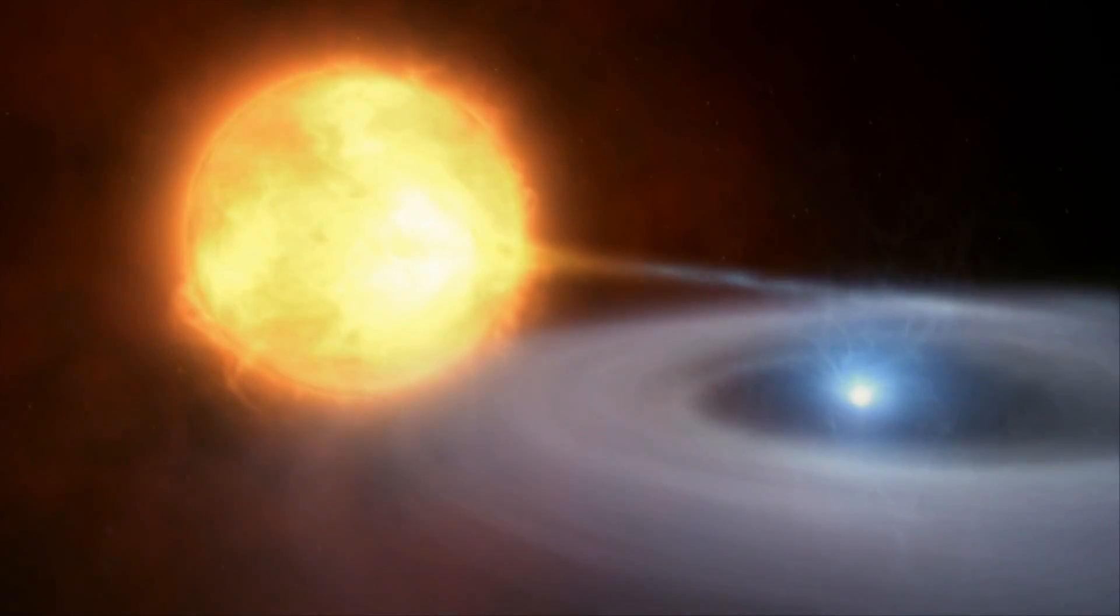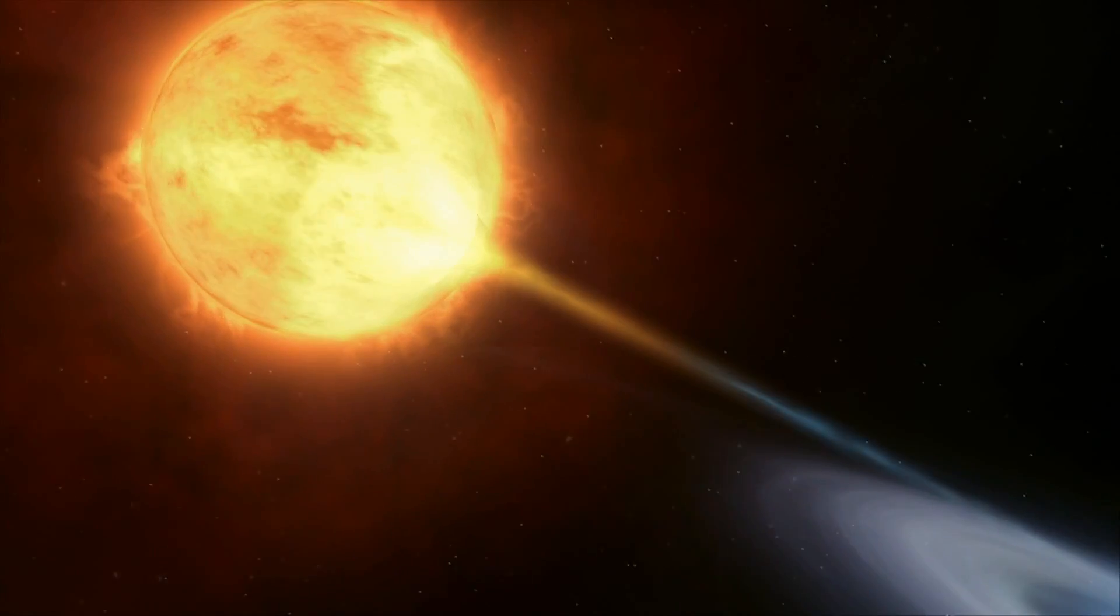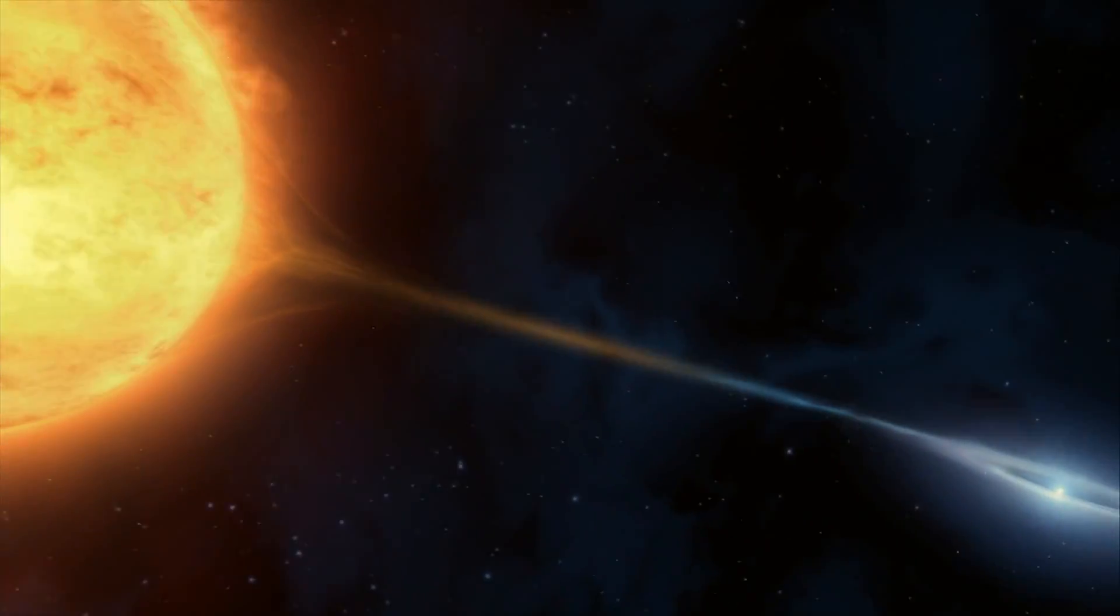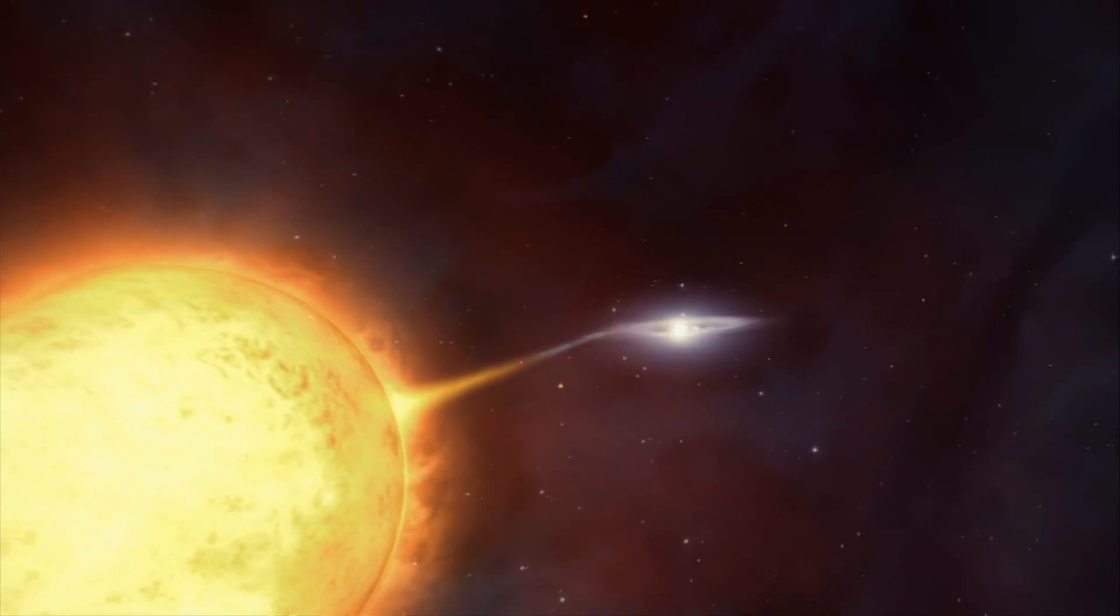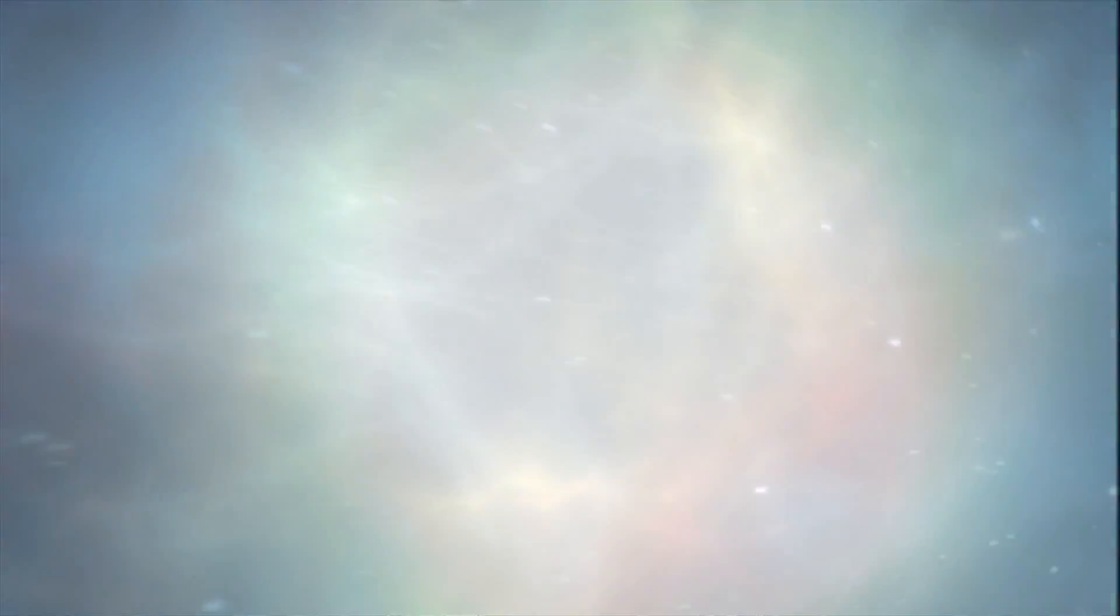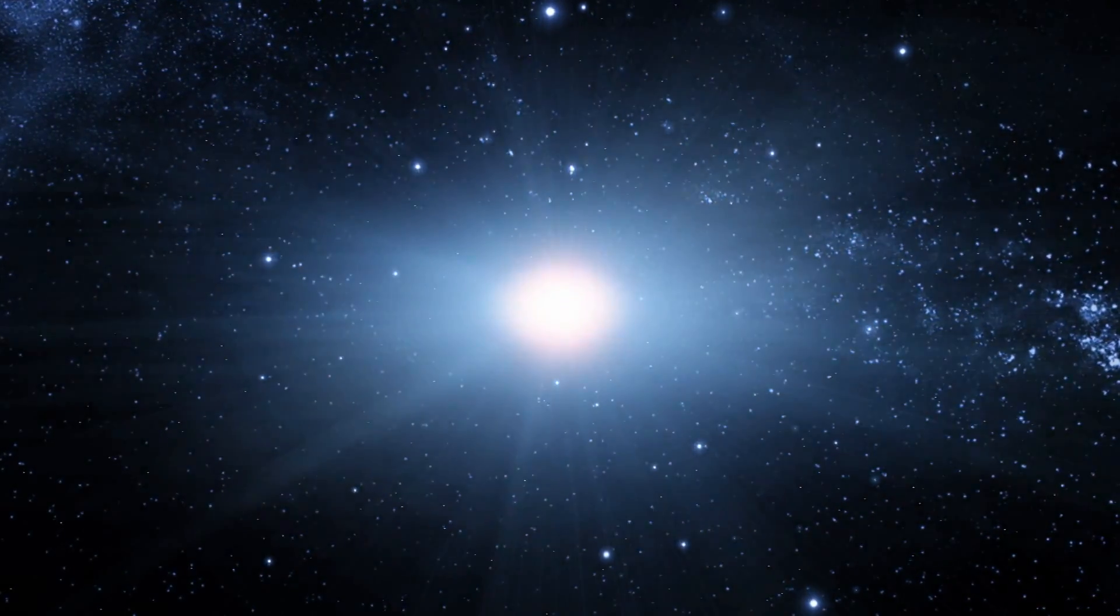As well as telling us about the star that has just died, supernovae are powerful tools for probing the cosmos. The supernovae that come from exploding white dwarfs have a peculiar property. They all have the same intrinsic brightness. This means that how bright they appear to a telescope is a measure of how distant they are, much like a street light looks bright when you're near it and dim when you're far away.